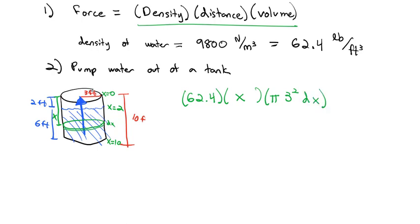Simplifying, 3² is 9, and 9 times 62.4 is 561.6π times x dx. That's what's required to pull that disk out of the water, to pump it out of that tank. We don't want just that disk, but all the disks from a depth of 2 all the way down to the bottom at depth of 10. To do that, we need to integrate from depth 2 to depth 10.